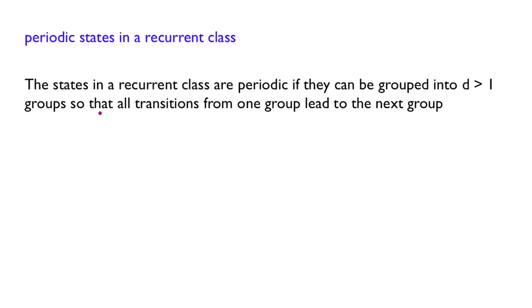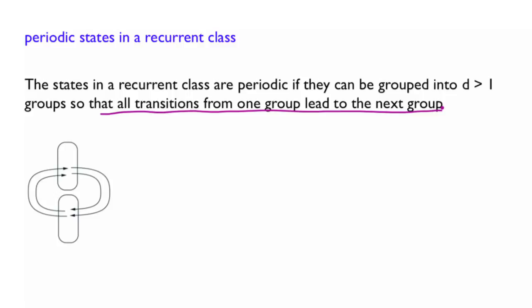Let us parse this out by looking at a given example. Here we have a structure with d equals 2. So whenever you are at a given time in a state in one group, in the next transition you will go to the other group. And if you are in that group, at the next transition you will go back. So in some sense, there is periodicity and somewhat deterministic behavior according to this transition.